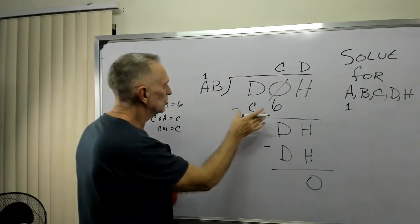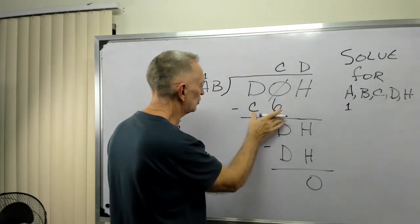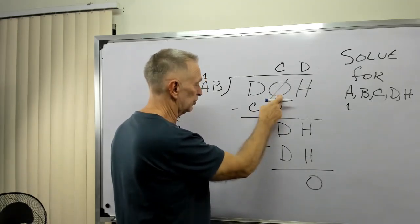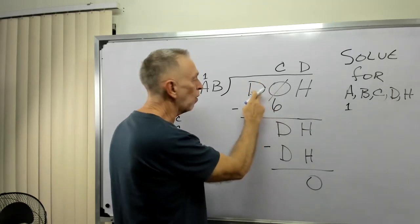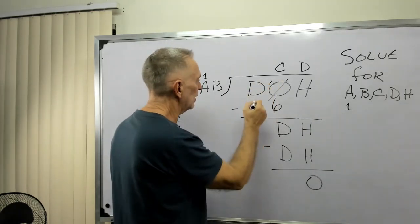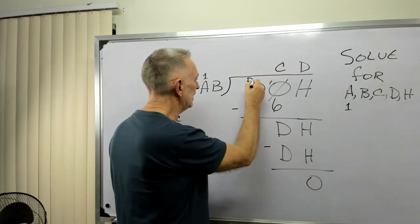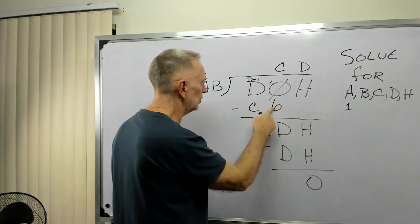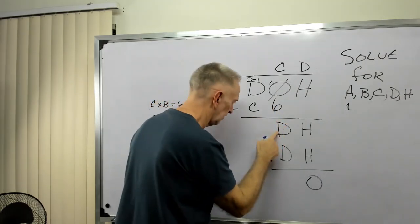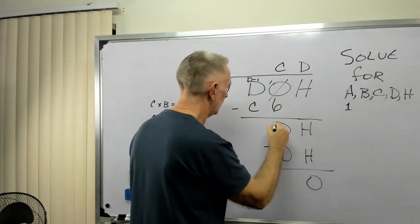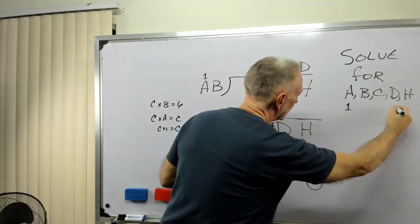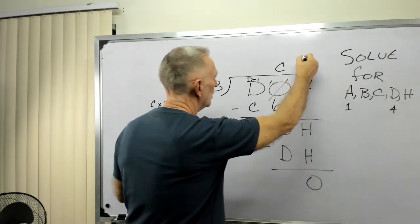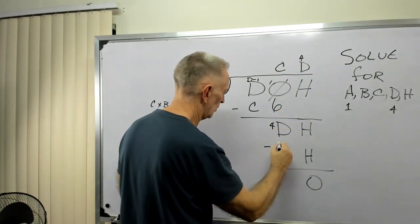So now we have this C6. 6 from 10, or from 0, we would have to borrow 1 to make that a 10. So this would be D minus 1. 10 minus 6 is 4. D seems to equal 4. So we have a 4, 4, and a 4.